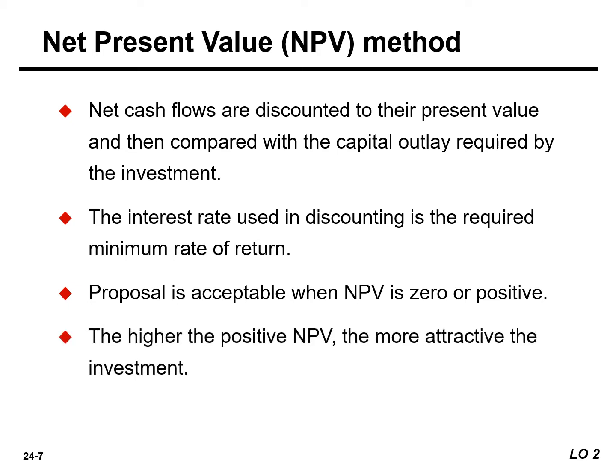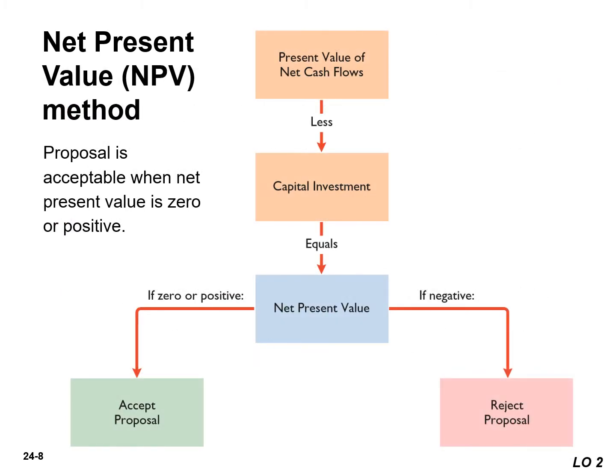When making a selection among acceptable proposals, the higher the positive net present value, the more attractive the investment. The NPV decision rule is this: a proposal is acceptable when the net present value is zero or positive. When the net present value is negative, the project is unacceptable or rejected.